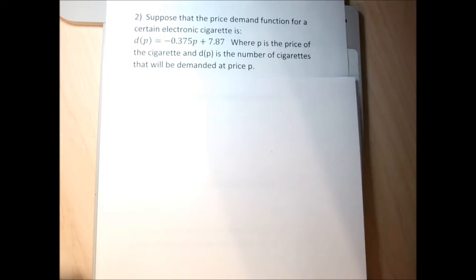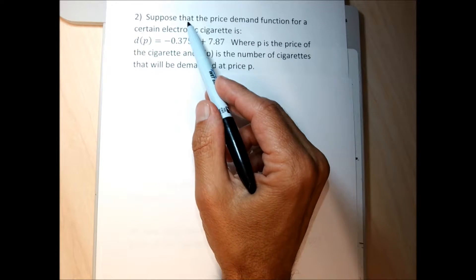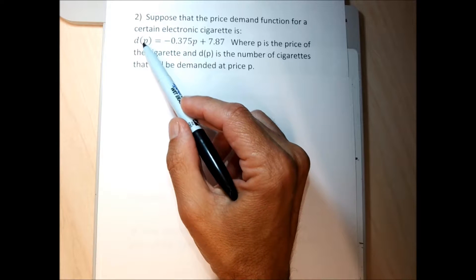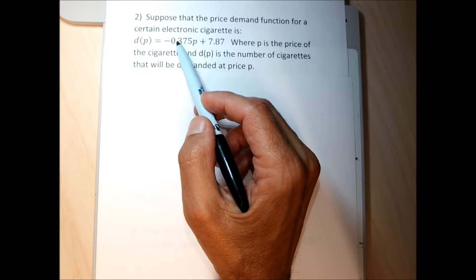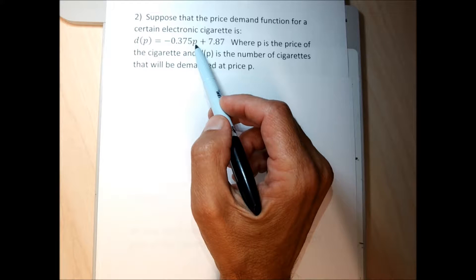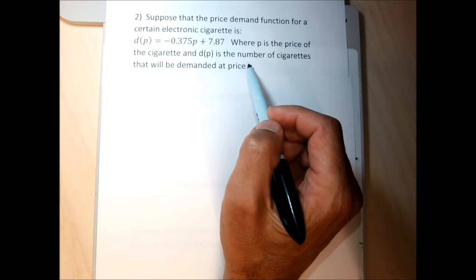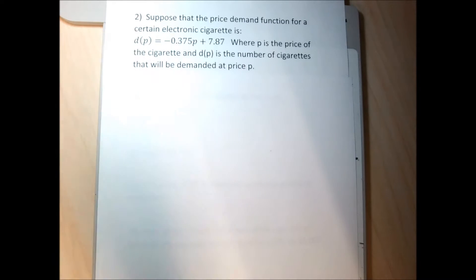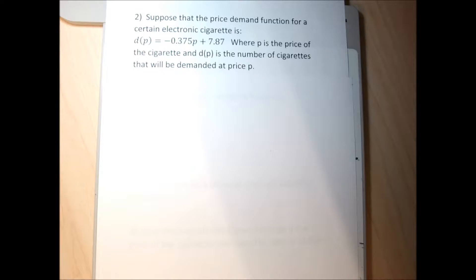Reading through problem two: suppose that a price demand function for a certain e-cigarette is given by D(P) equals negative 0.375P plus 7.87, where P is the price in dollars and D(P) is the number of cigarettes demanded at that price. Each of the functions for the word problems in section 4.3 are as simple as I can make them — in the real world functions get a lot nastier, but then the calculus gets a little ridiculous.